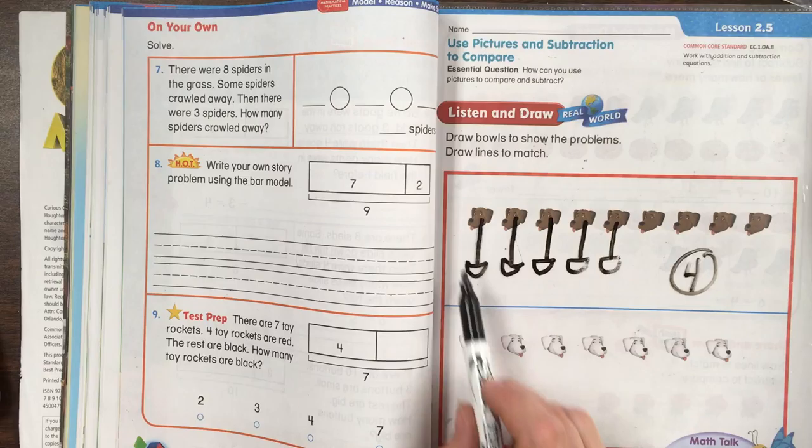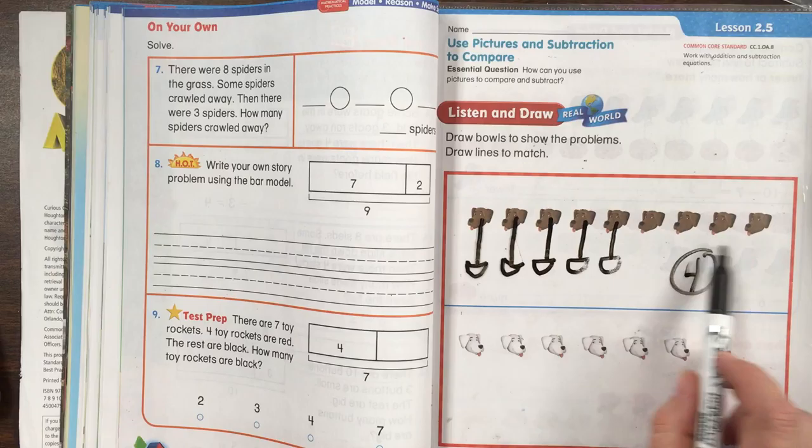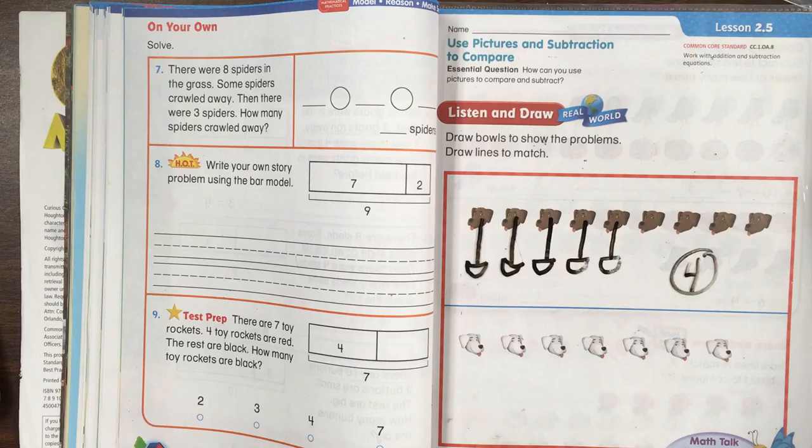Four is correct. The difference between the number of dogs that there are total and the number that have a bowl is four. There are four that don't have a bowl. Difference is an important word and we'll be continuing to talk about that. Difference is the word that means the answer to a subtraction problem.